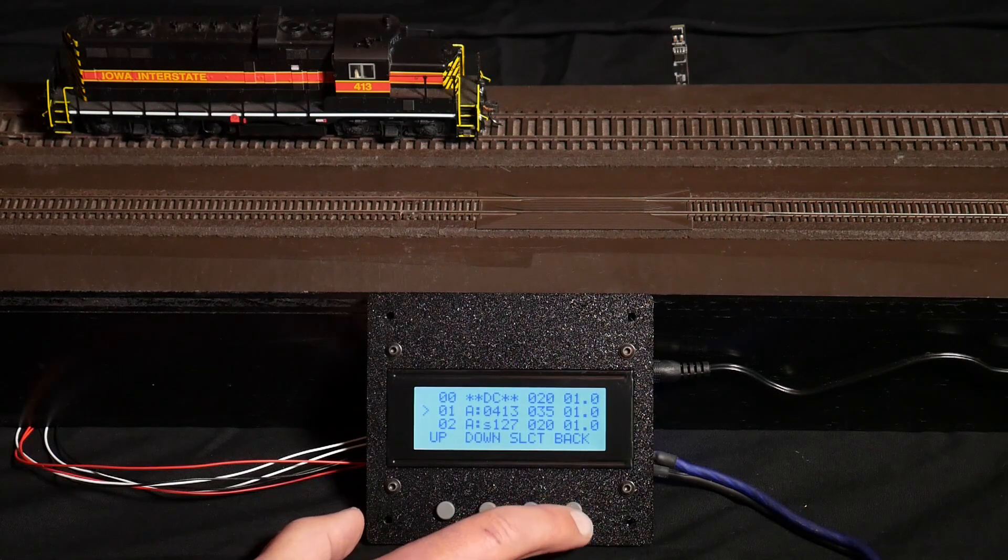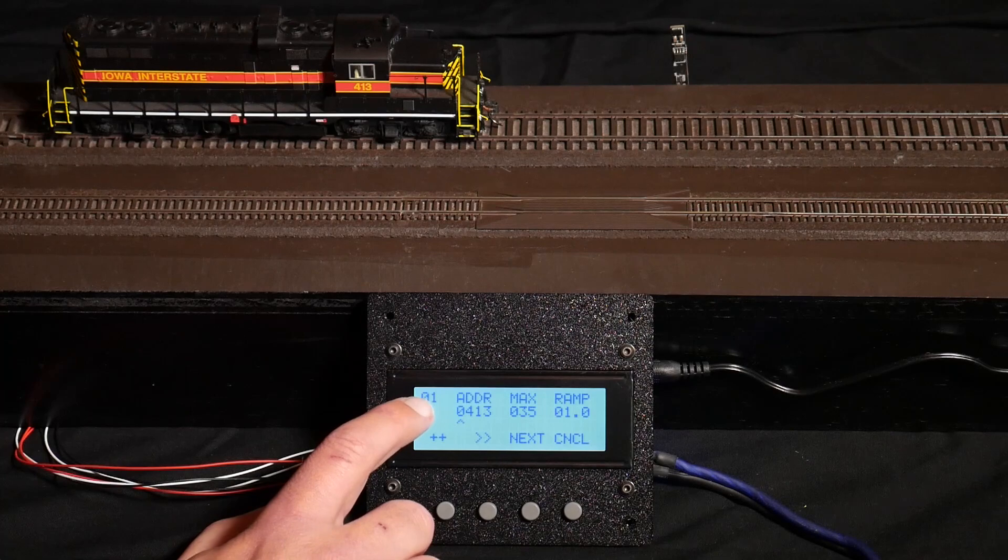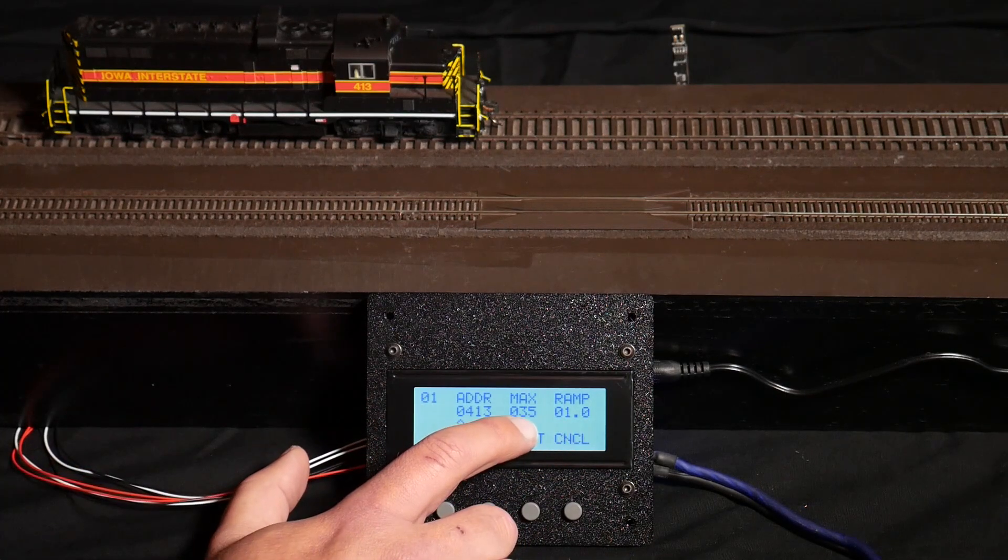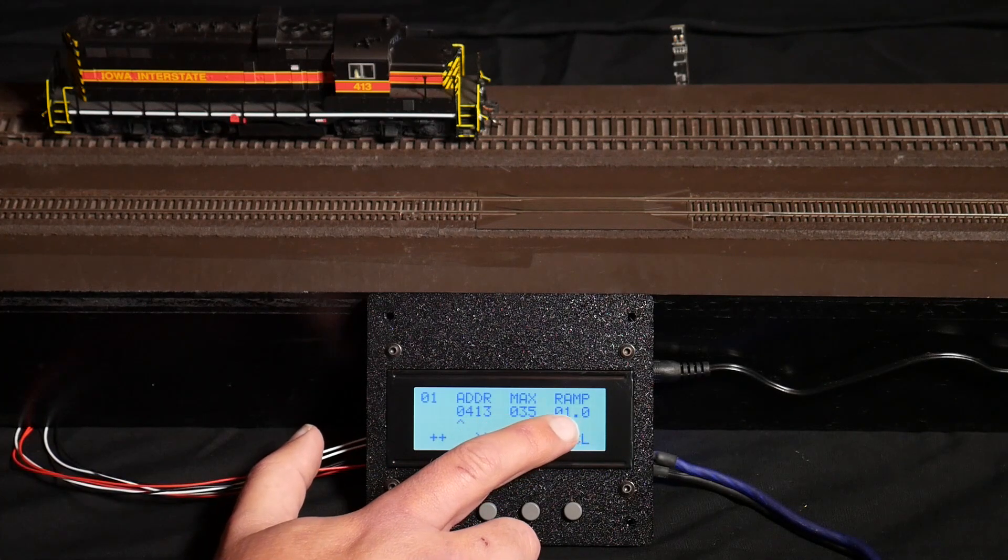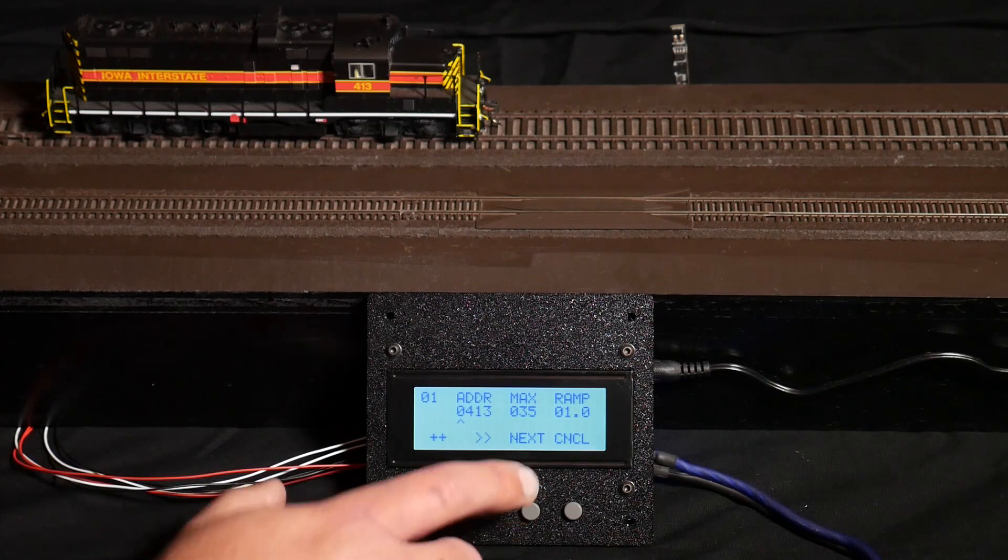So let's say we want to change the configuration here. From this screen, you see that we're in slot one. We can set the address here. We can set its maximum speed as a percentage, 0 to 100%, and a ramp rate in seconds. That's how fast it goes from stopped to full speed.